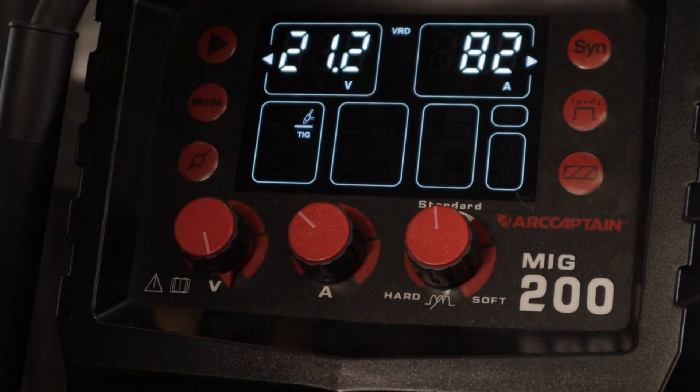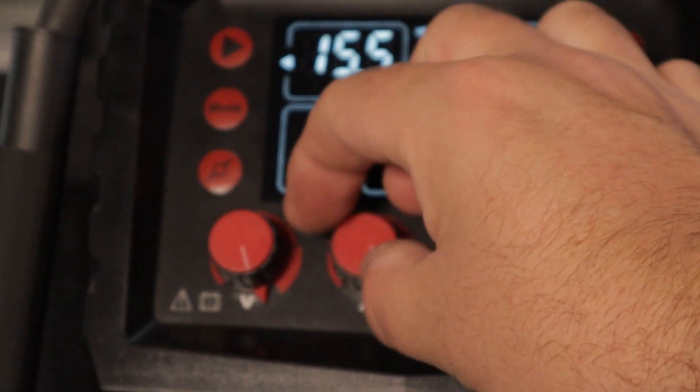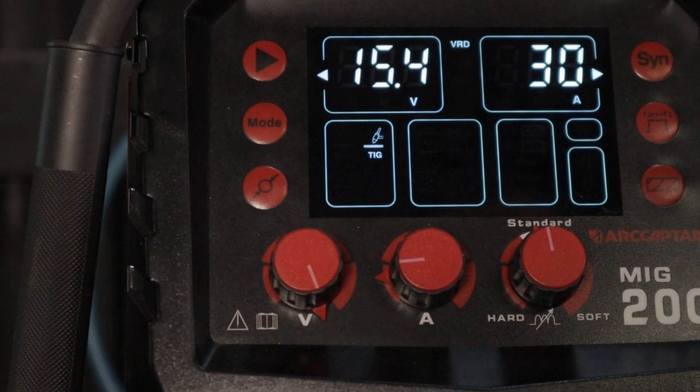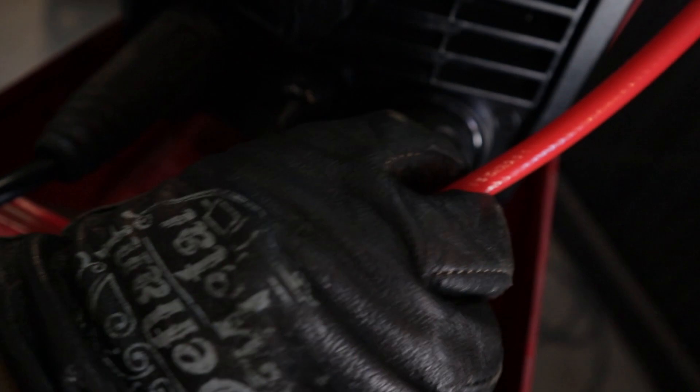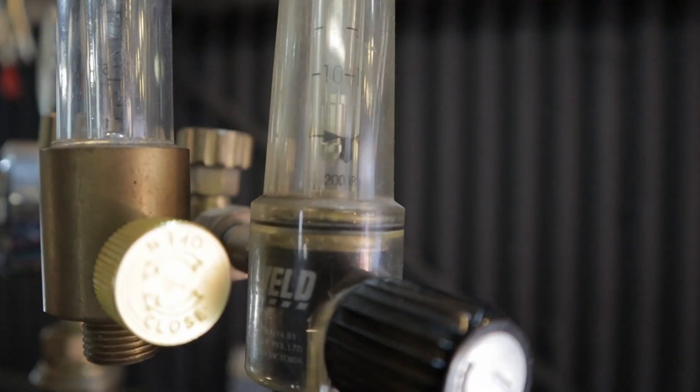To change from MIG to TIG, simply cycle through to TIG, disconnect the pigtail, change the ground to positive and connect the TIG torch. The gas hose is fitted directly to the regulator and the argon flow rate is at 20 CFH or 9 liters per minute.